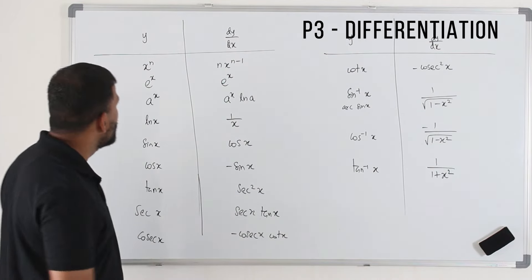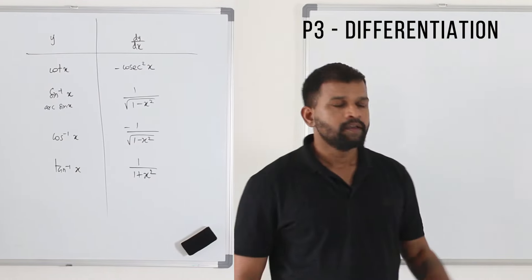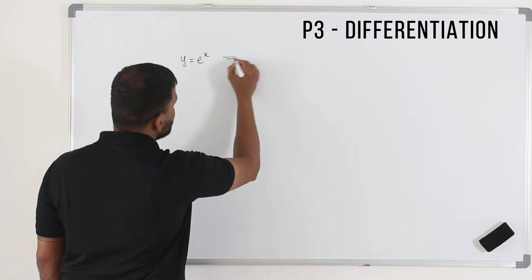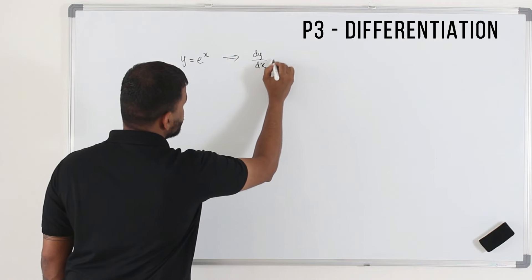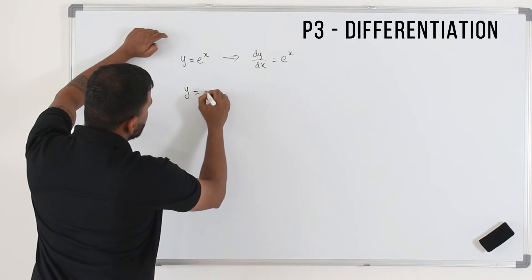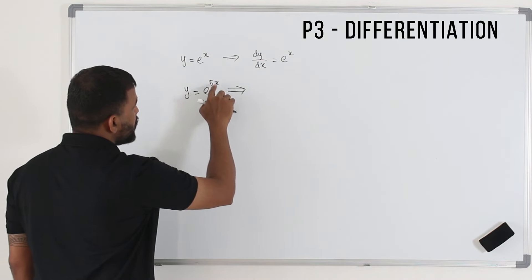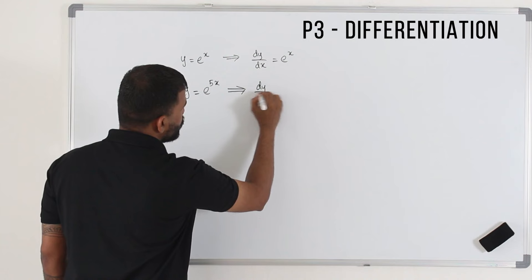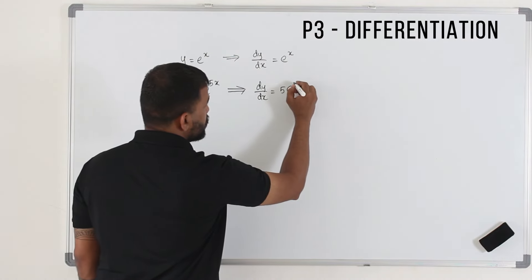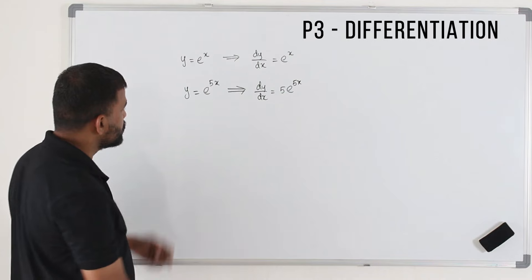Now, what if in the place of x you have a constant multiplied by x? Let's take y equals e power x — the derivative is e power x. Now if you have e power 5x, the rule is the same, but you multiply by the coefficient of x. So dy/dx is 5e power 5x — just write the same thing and put the coefficient of x in front.